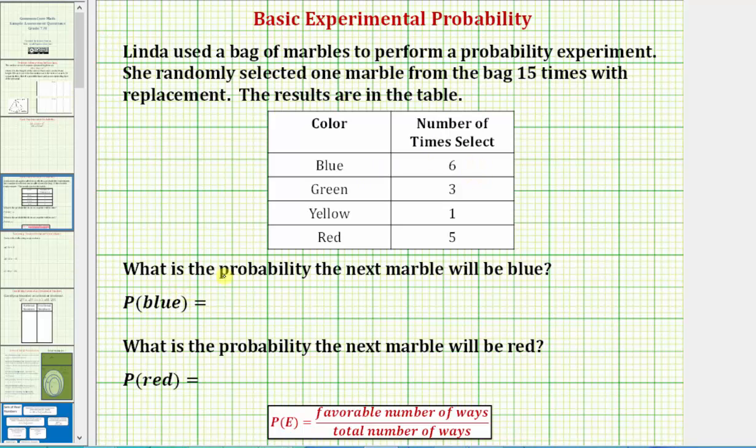So the probability the next marble will be blue, because blue was selected six out of fifteen times, will be 6/15.